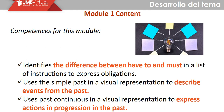Model one content competencies: the first one is identifying the difference between 'have to' and 'must' in a list of instructions to express obligations. The second competency involves using the simple past in a visual presentation to describe past events, and using the past continuous in a visual representation to express actions in progress in the past.